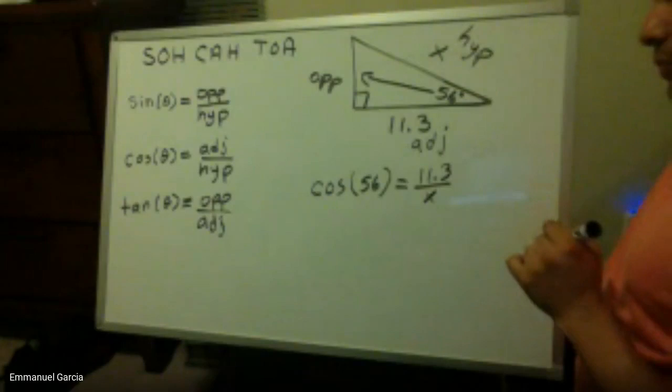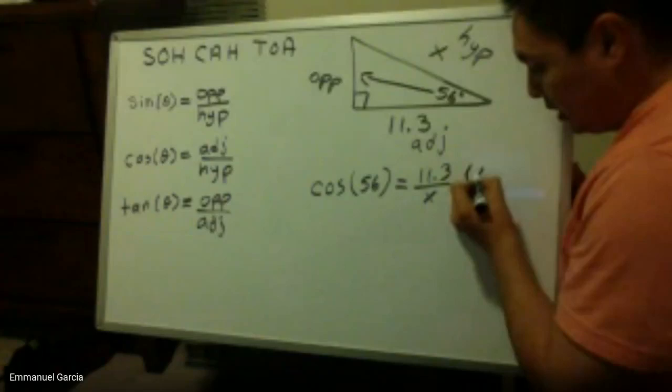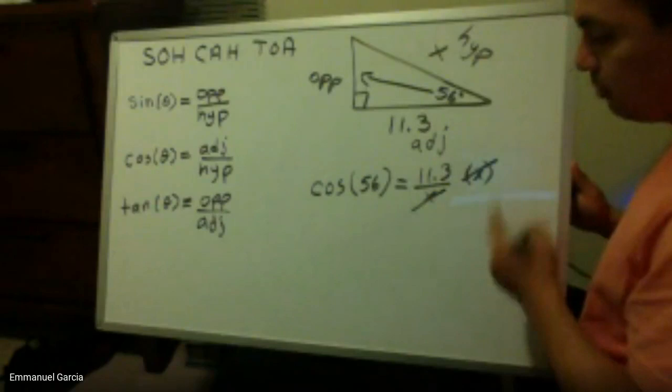So I need to solve for x. Notice that my x value is on the denominator so I have to be careful how I solve it. First I need to get rid of my x down there. So I'm going to multiply times x. x divided by x cancels out.